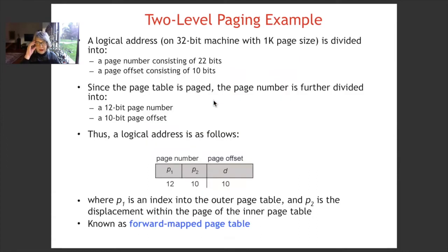Consider an example in which a logical address on a 32-bit machine with 1K page size is divided into a page number consisting of 22 bits and a page offset consisting of 10 bits. Since the page table is paged, the page number is further divided into a 12-bit page number and a 10-bit page offset.